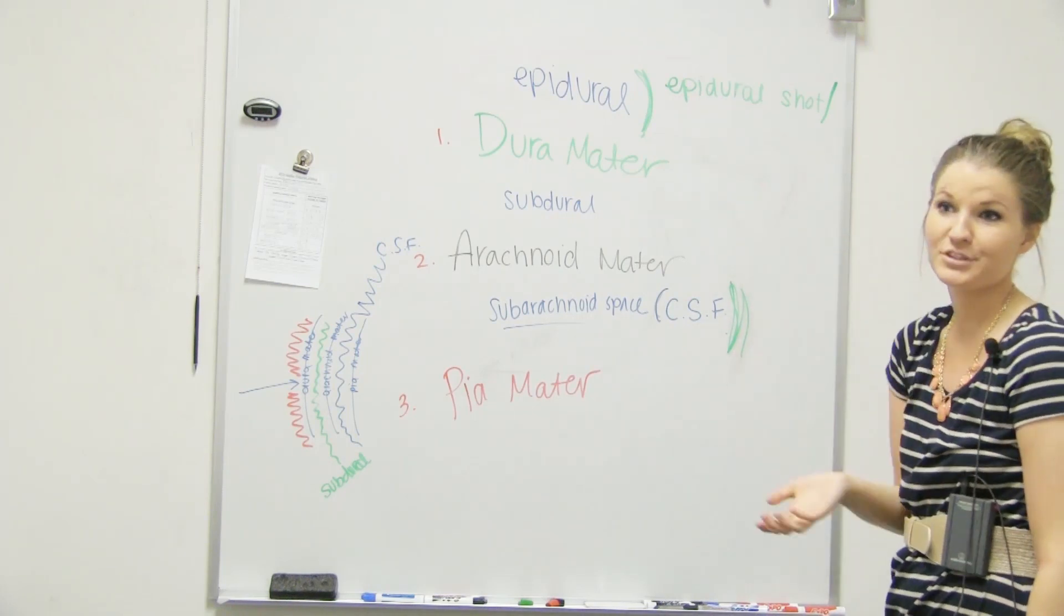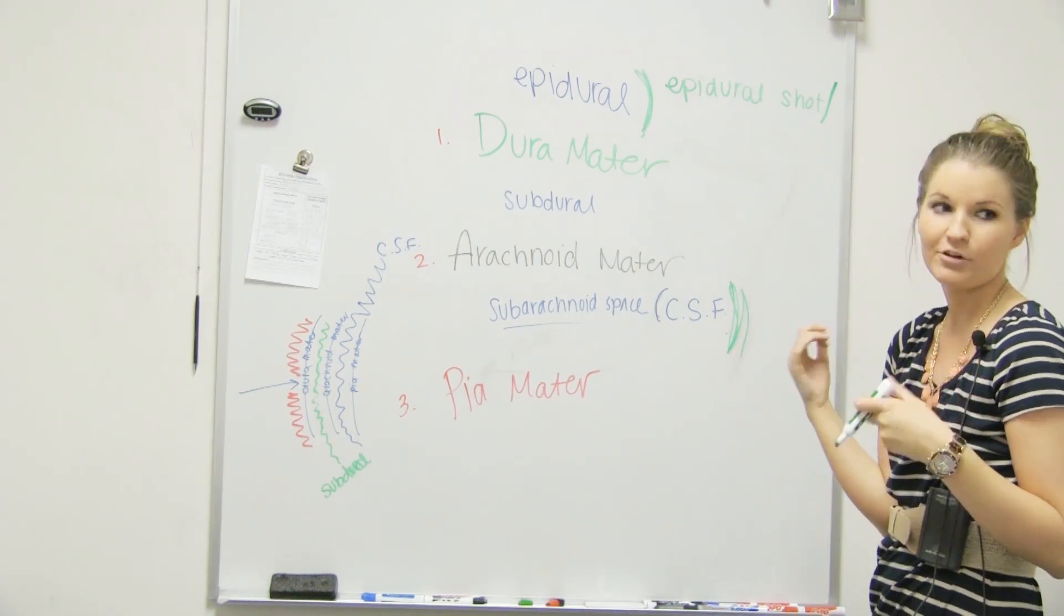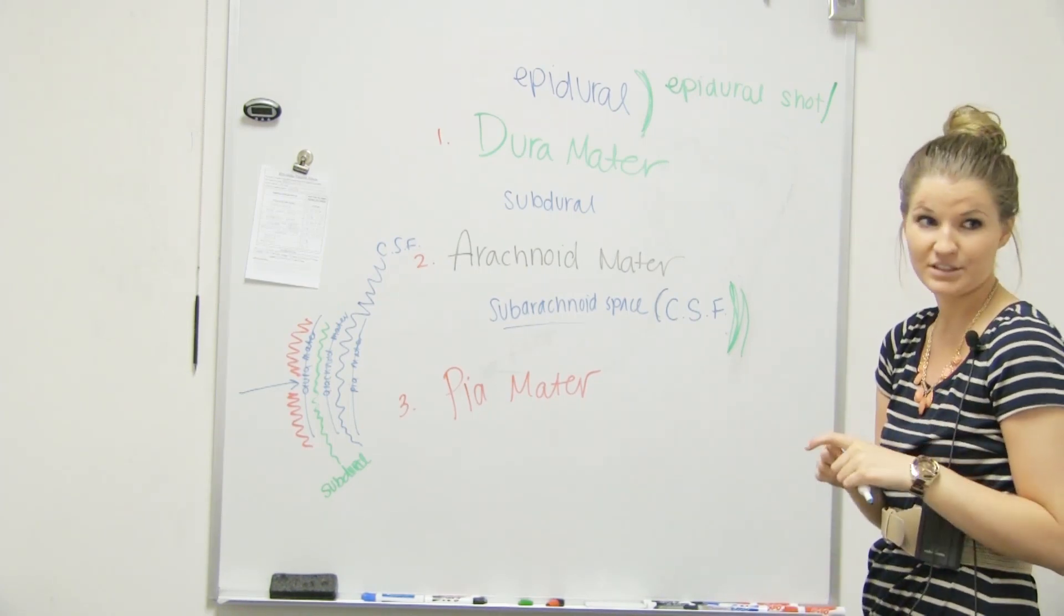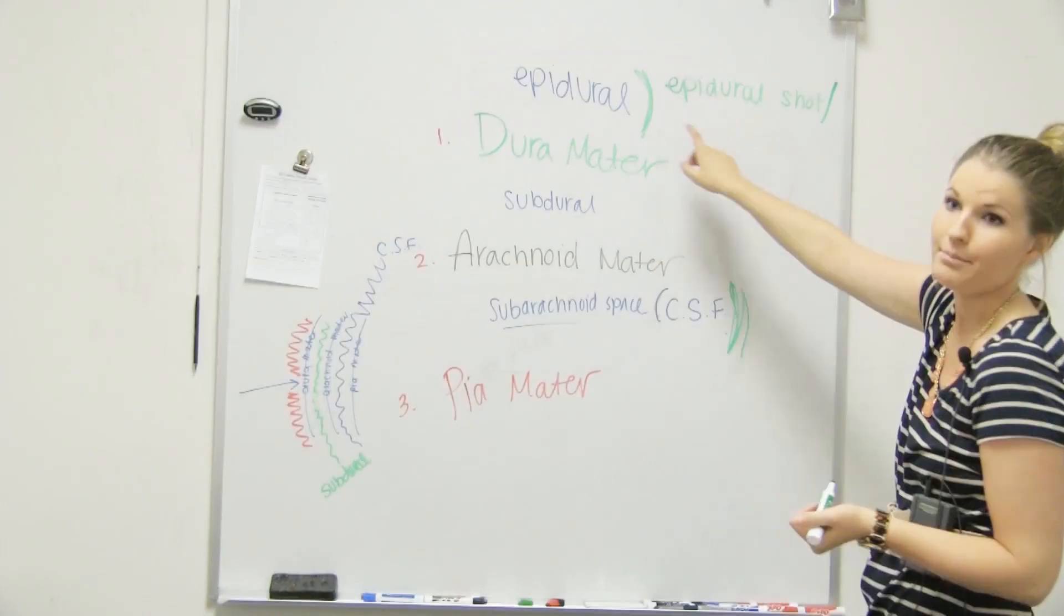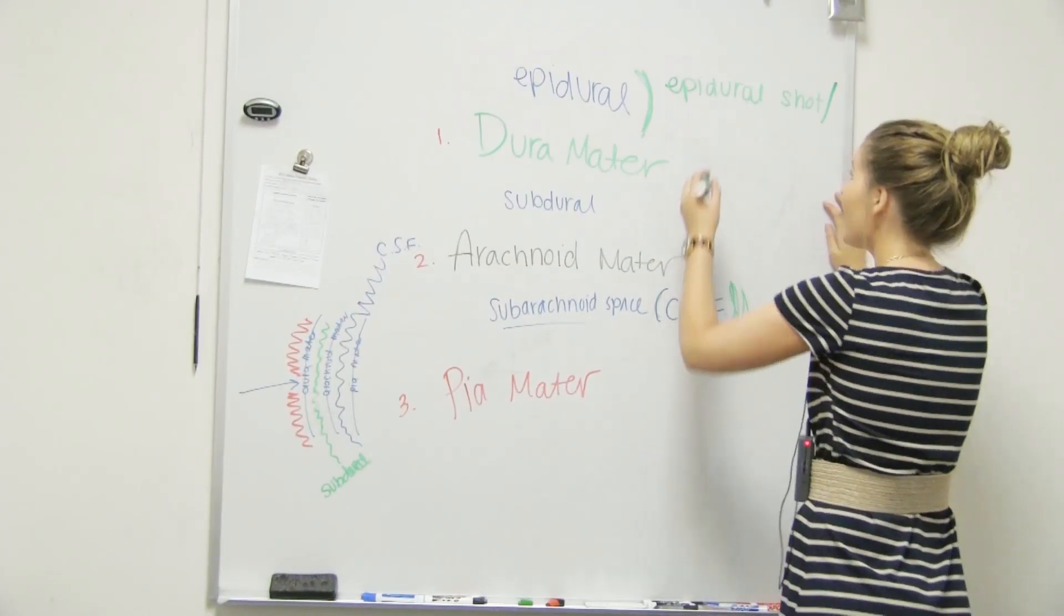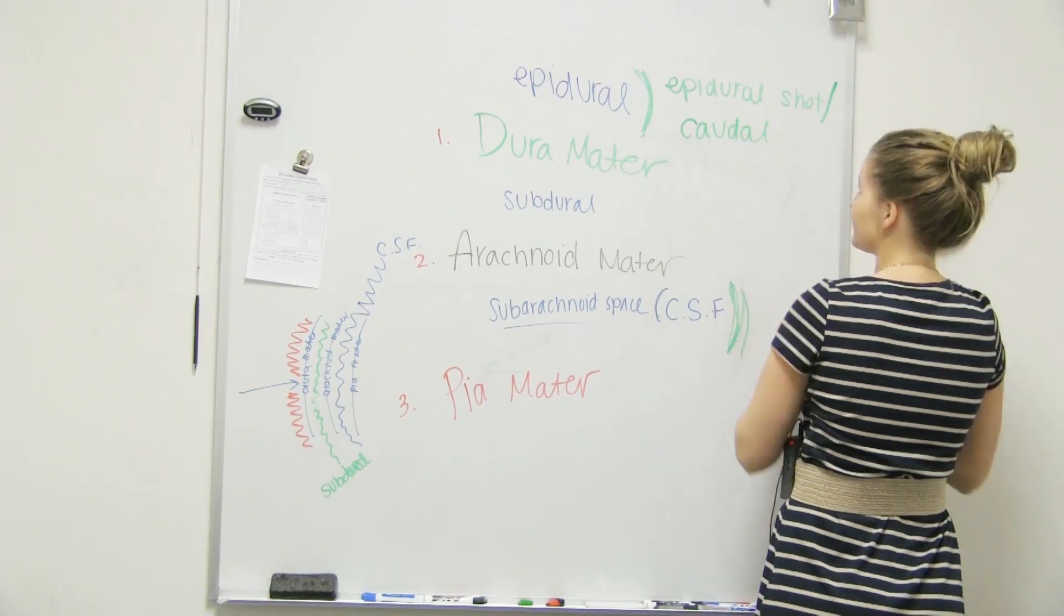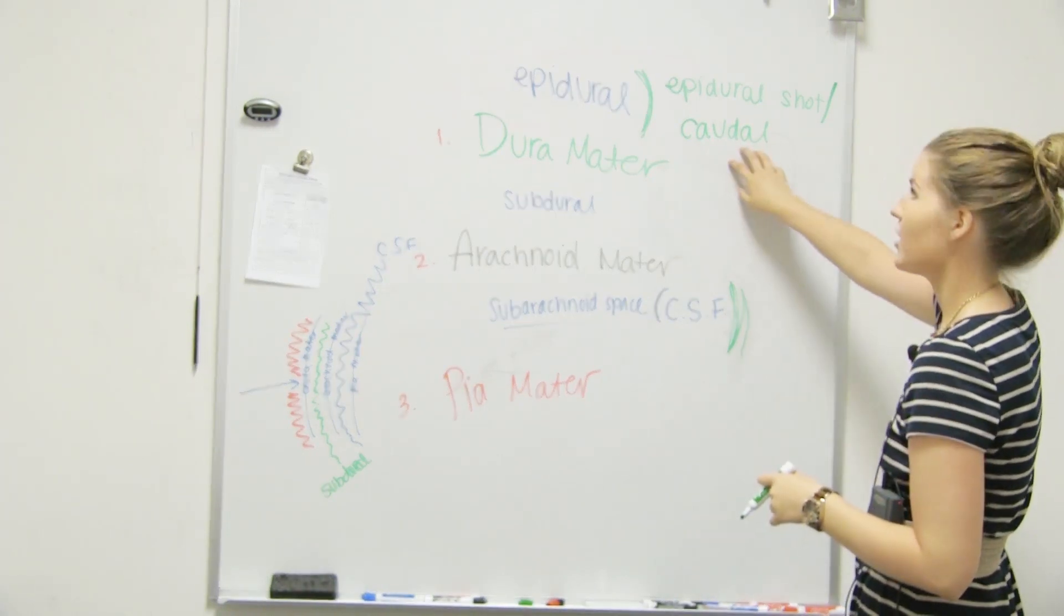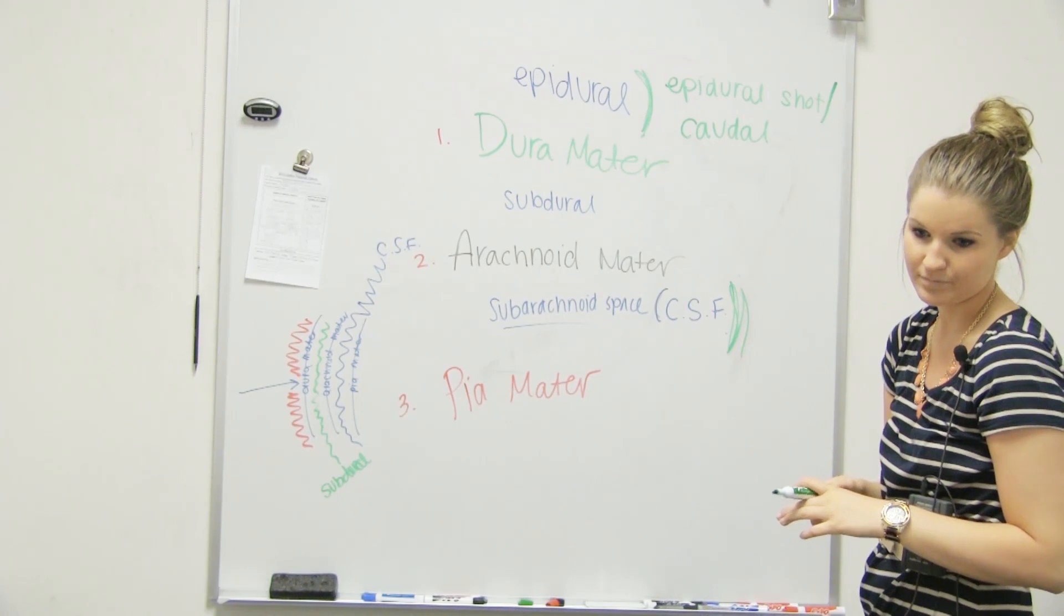What's another word for epidural? Epidural is kind of what we use today in the medical field, but like Brother Baker said, his mom, when she went to give labor, they didn't give an epidural. Caudal. Yeah, that's what it was. The caudal. Was it the caudal space or just the caudal? It's going to be the caudal shot in the epidural space.